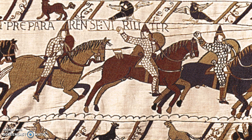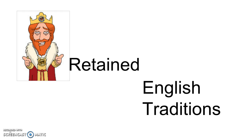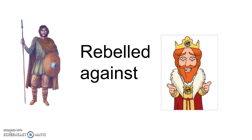Once the English were defeated, William I took over the throne. He retained the English system of government and allowed the surviving aristocrats to maintain their land.